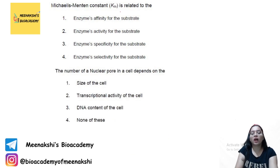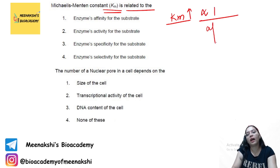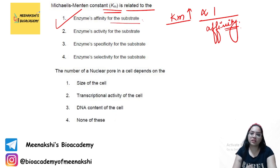For the Michaelis-Menten equation, the KM constant is related to affinity. If KM is less, the affinity is more — this relationship you have to always remember. So the answer relates to enzyme affinity for the substrate being inversely proportional to KM.